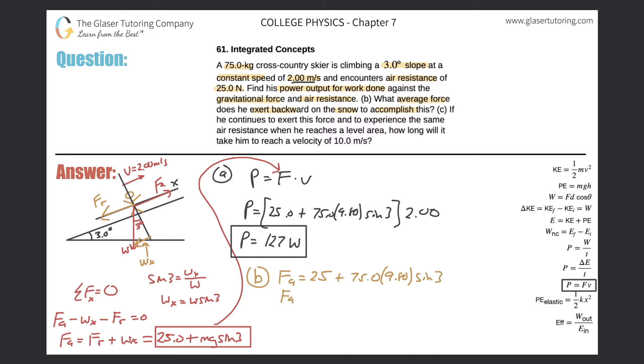And remember, F sub A, the applied force we said before was 25 plus the mass 75 times gravity, 9.80 times then the sine of three. So this is just plug it into the calculator. I mean, we can basically divide the top answer by two. And we should get the same value.